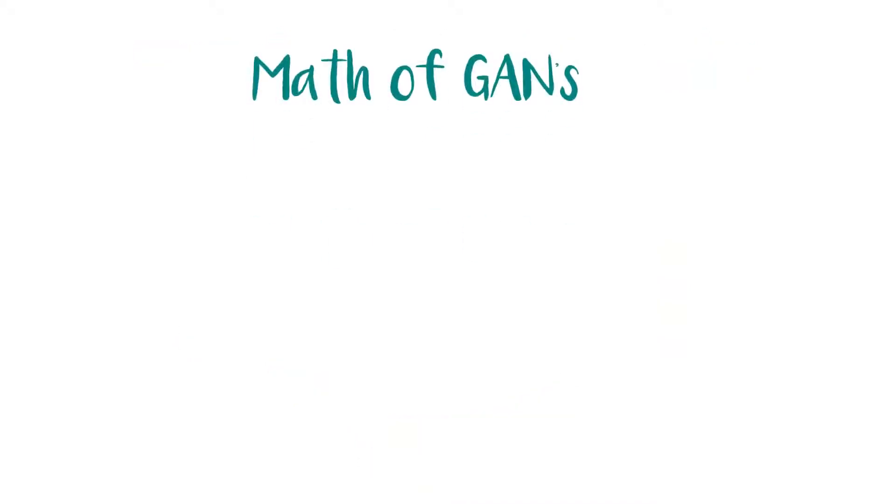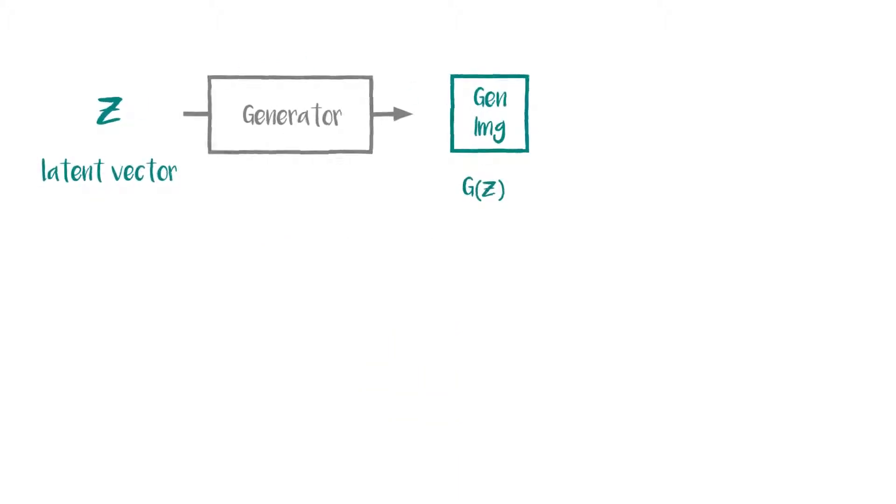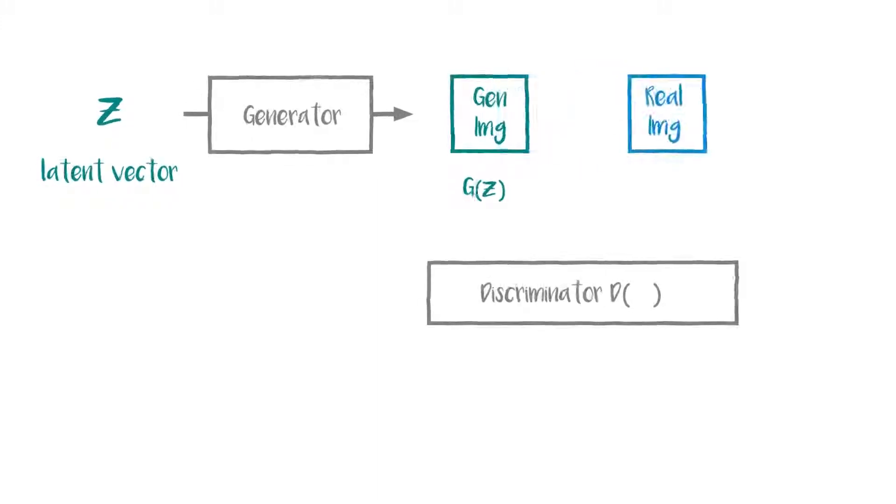The math of GANs excites me the most. Let's say we have a latent vector z. We generate an image G(z) out of it. We apply the discriminator D over the real image x and the generated image G(z). The intention of the loss function is to push predictions for real images towards 1 and for fake images to 0.